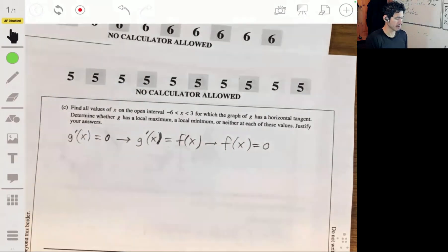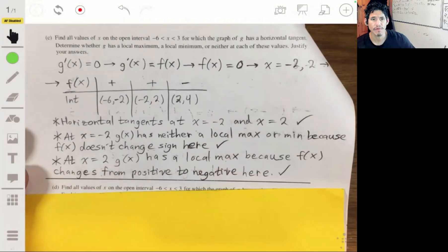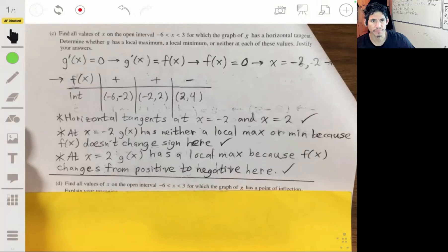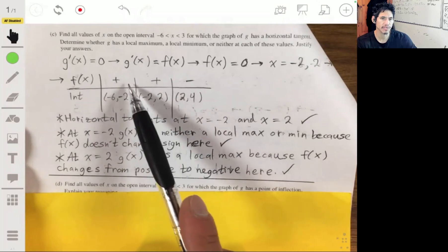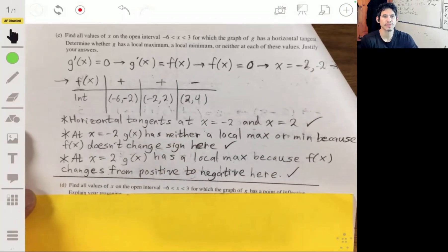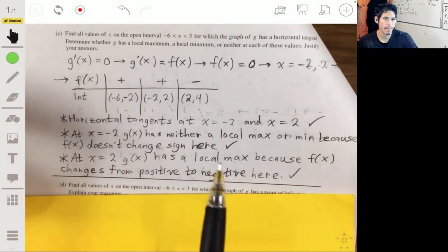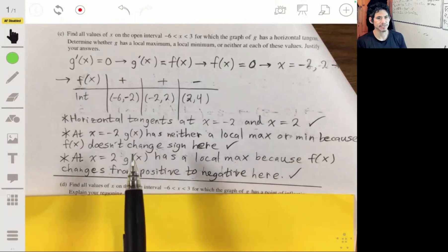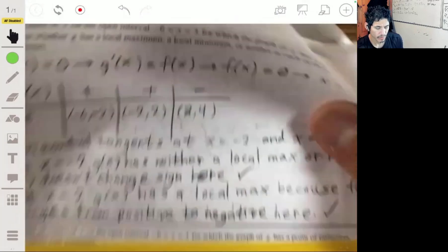Let me just show you the full answer I wrote so you can save me some time. This is the work I used. I don't even think you had to be this elaborate. In their answer key they did less work, but I love math, so here it is. I just showed the table with positive signs, negative signs, and horizontal tangents at negative 2 and 2. I say there's neither local max or minimum at negative 2 because it changes sign, and a local max at 2 because it changes from positive to negative there.